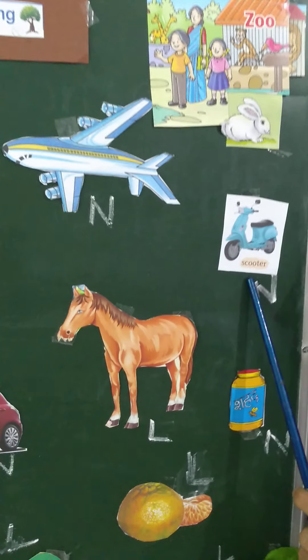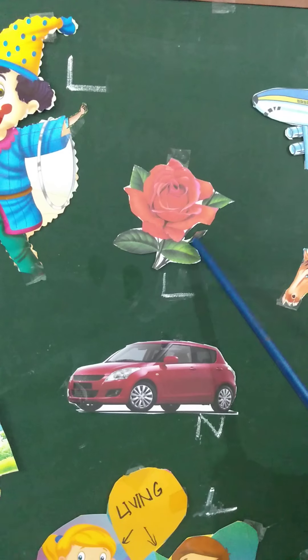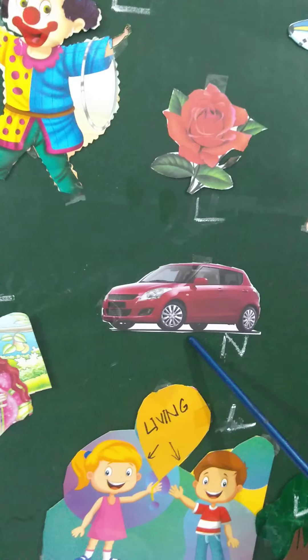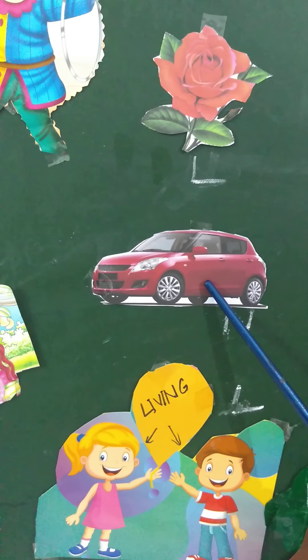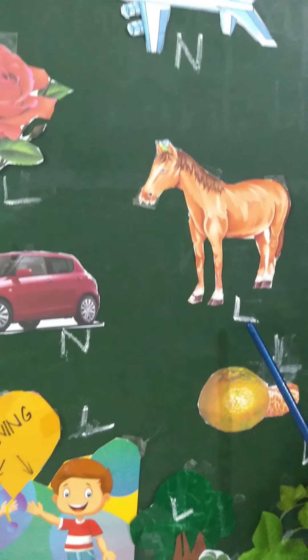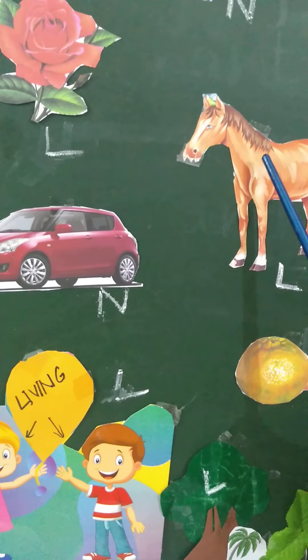See next: a scooter is a non-living thing. And a rose is a living thing. A car is also a non-living thing. A horse is a living thing — that's why L is written here, because it is a living thing.